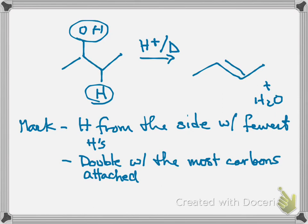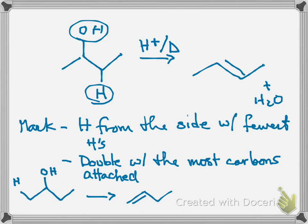If I take that OH and the hydrogen at the end — this hydrogen — I would end up with the double bond at the end. The actual product has the double bond in the middle. How many carbons are attached to that double bond? One and two. How many attach to the end double bond? Just one. You can tell from bond line which one to pick.